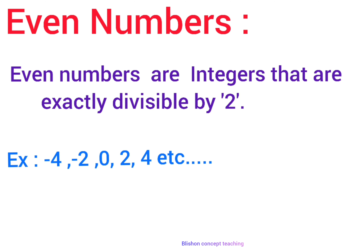Definition of Even Numbers: Even numbers are integers that are exactly divisible by 2. Examples include minus 4, minus 2, 0, 2, 4, etc.